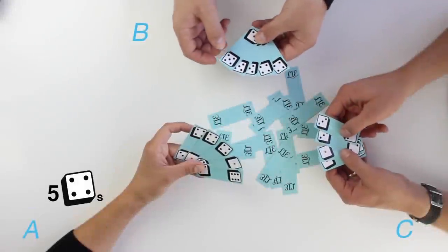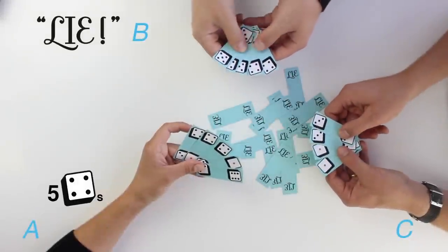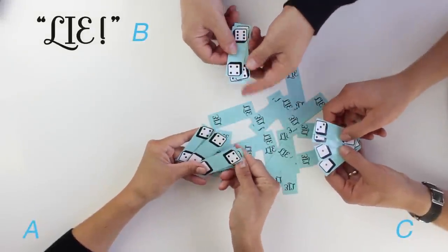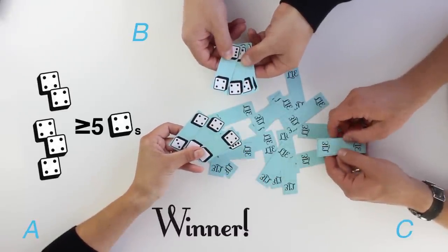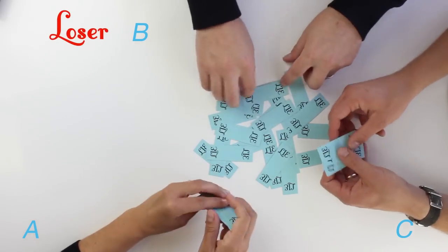Player A bids five fours. And Player B calls lie on Player A. When all players show their hands, we see that there are at least five fours. Player A wins the challenge. Player B will draw one less card in the next round.